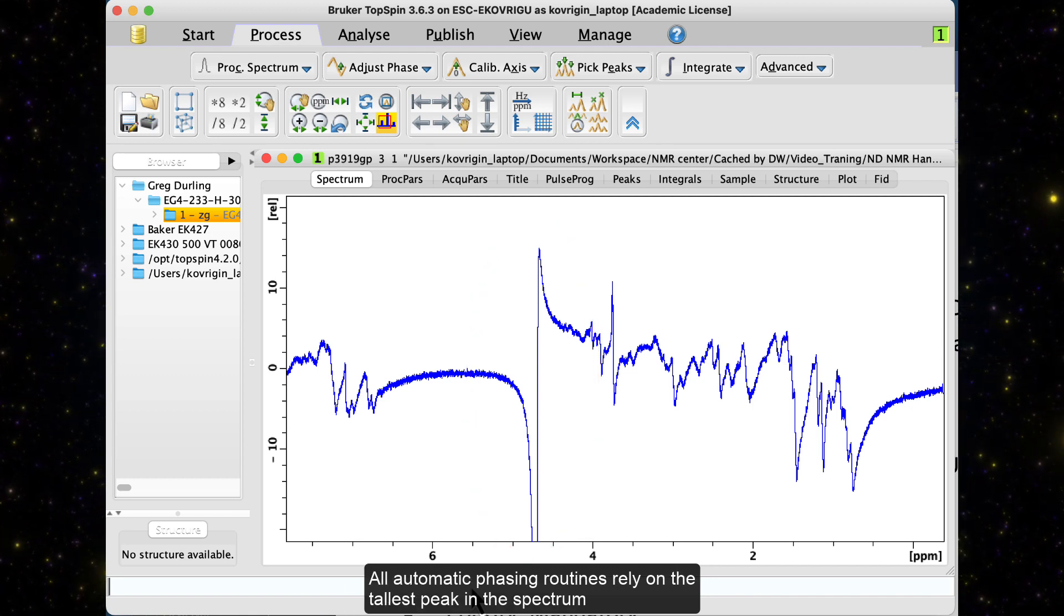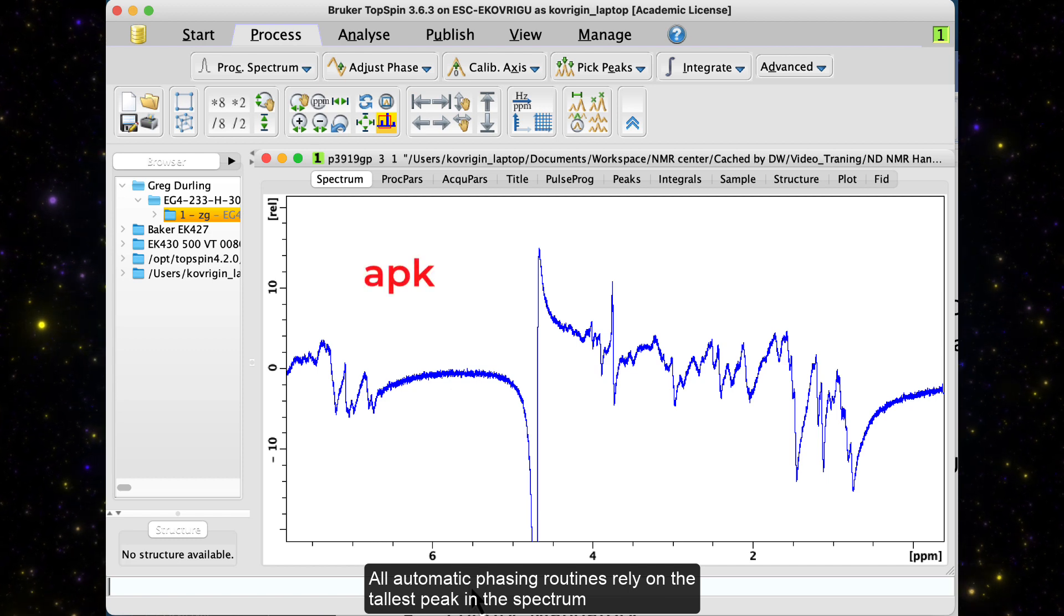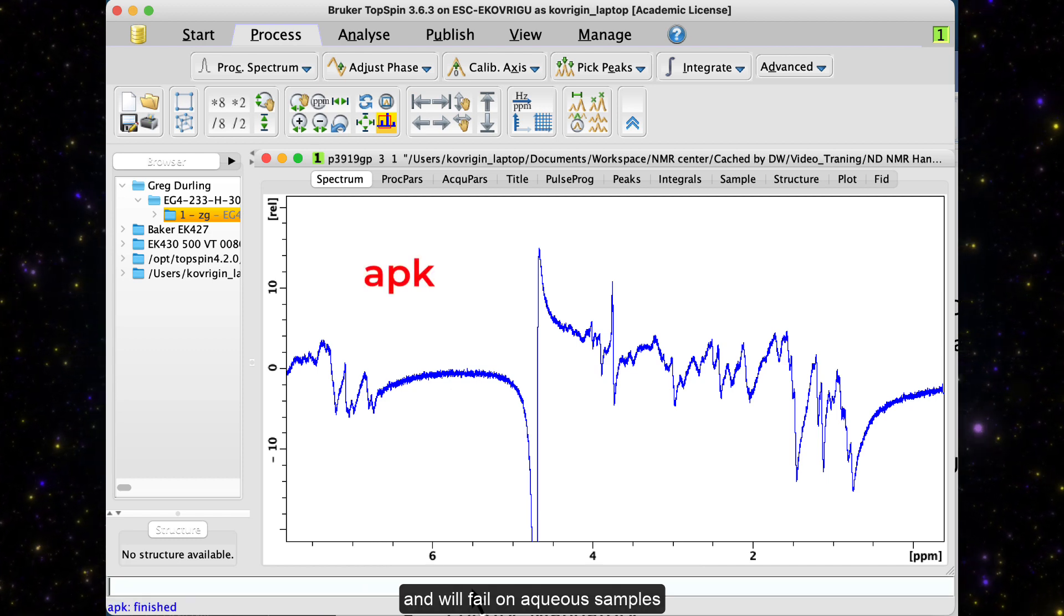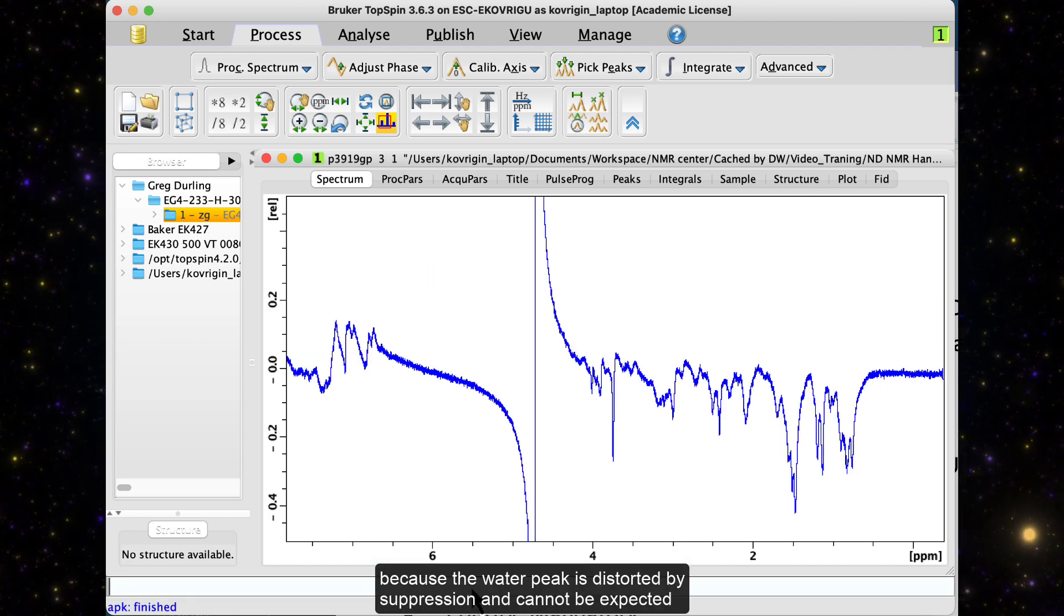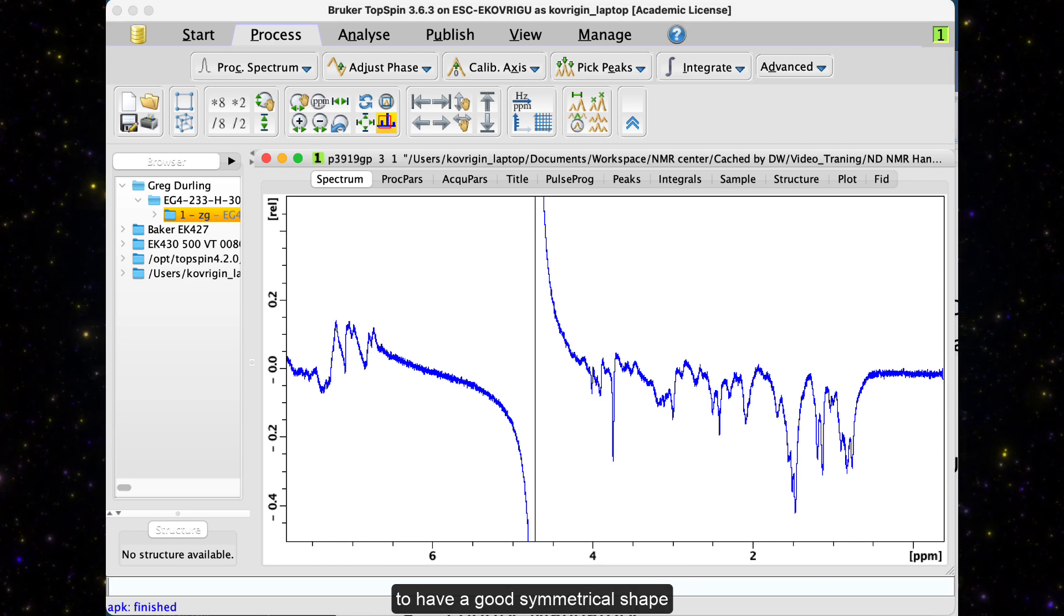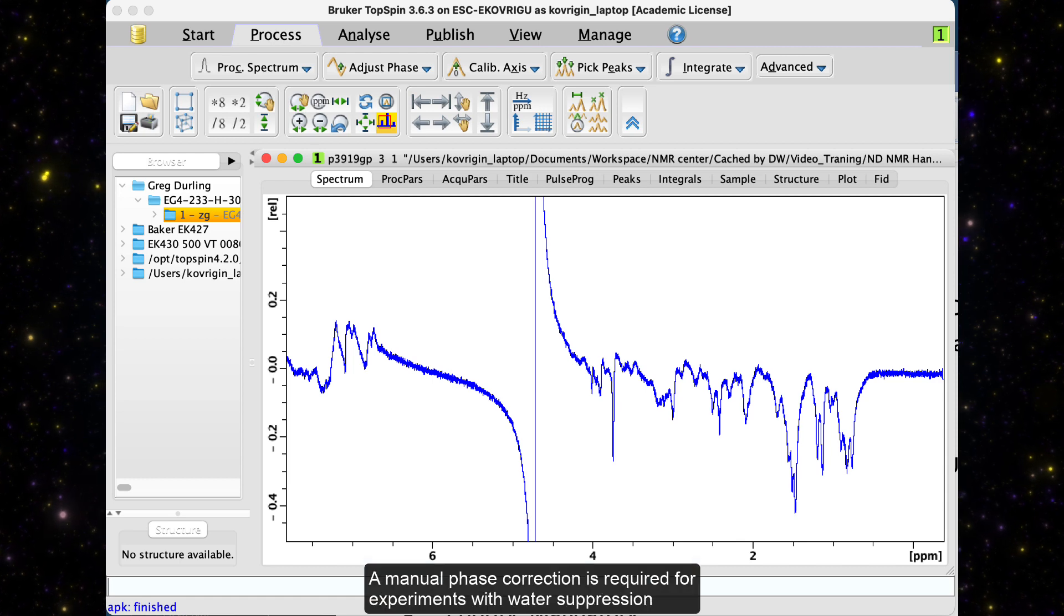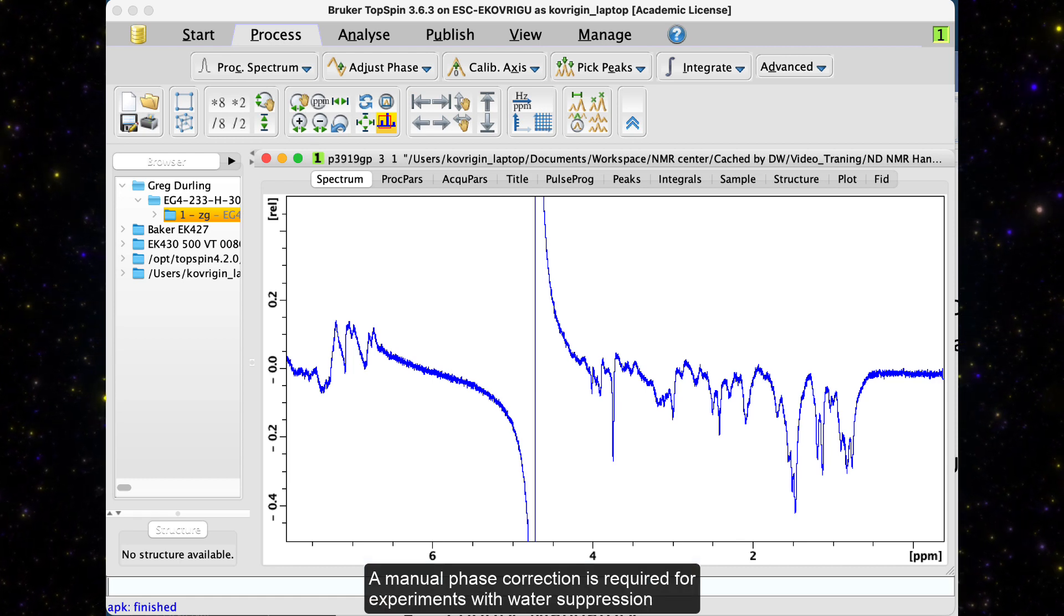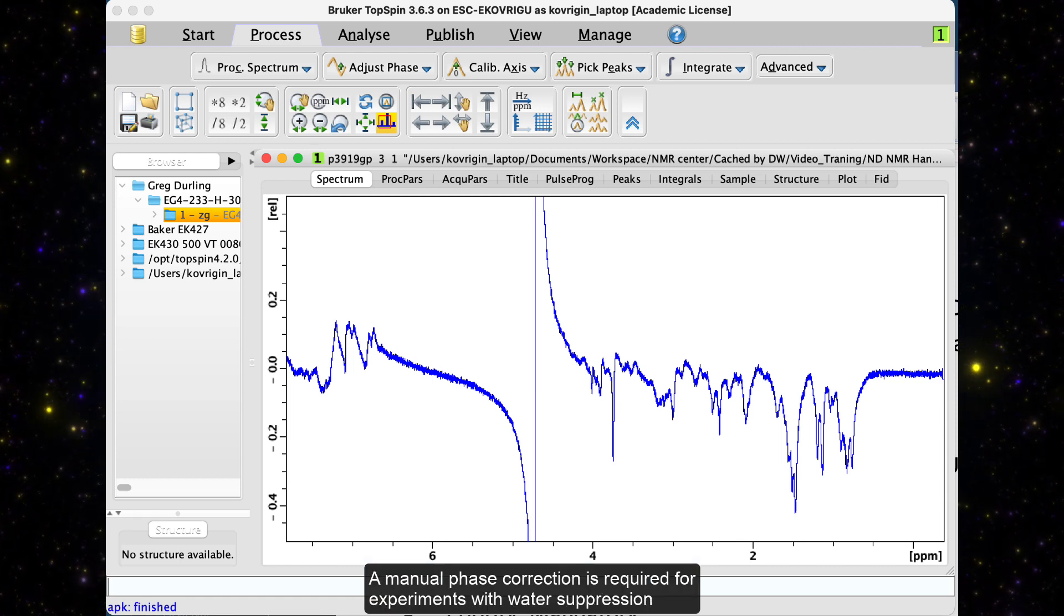All automatic phasing routines rely on the tallest peak in the spectrum and will fail on aqueous samples, because the water peak is distorted by suppression and cannot be expected to have a good symmetrical shape. A manual phase correction is required for experiments with water suppression.